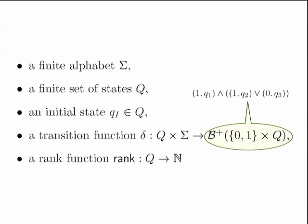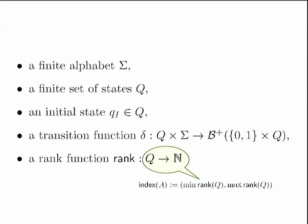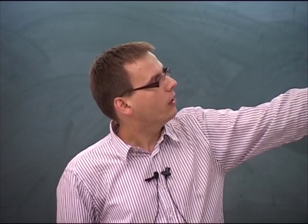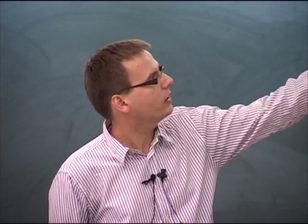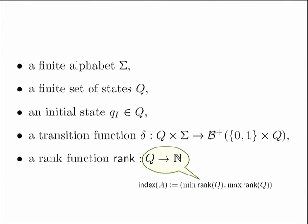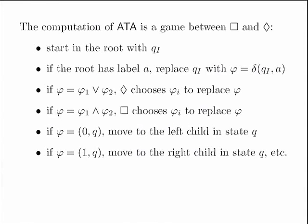This rank function is used to define accepting runs. The essential parameter of this model is the number of ranks used — not just the count but also whether you start from an odd or even rank. This measure, used to express how complex your acceptance condition is, is called the index, and it consists of the minimal rank used and the maximal rank used.